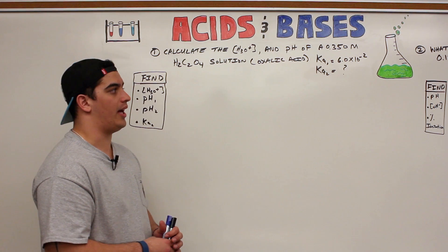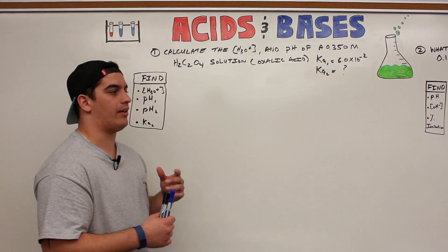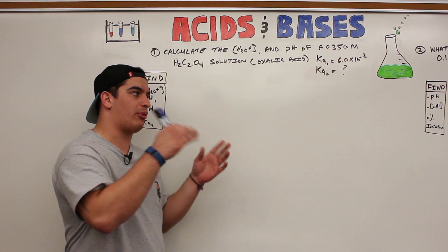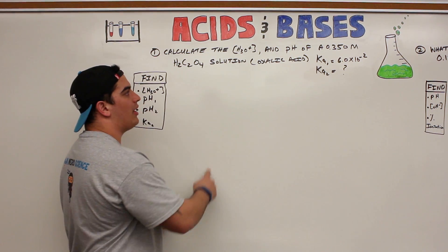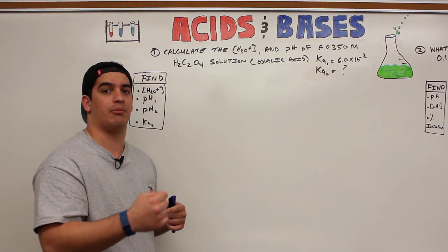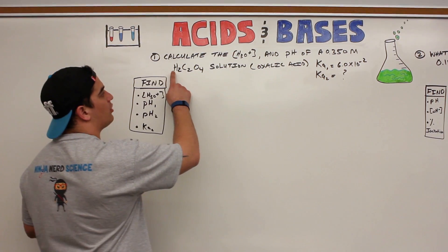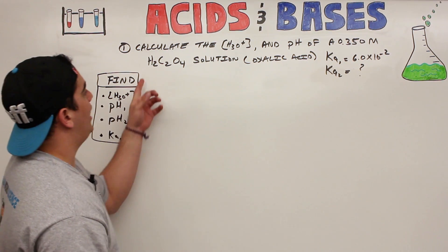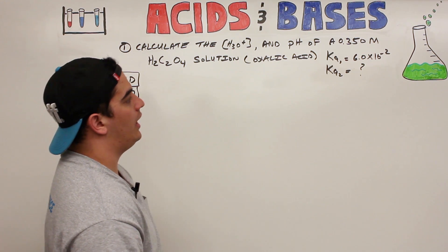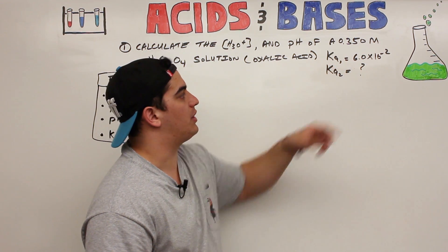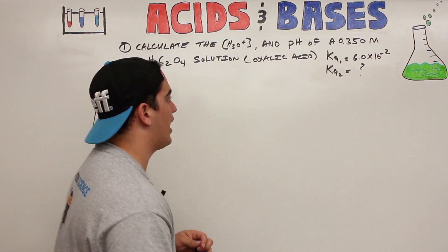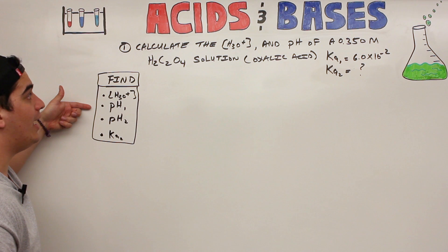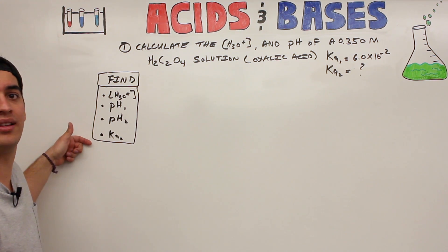Alright Ninja Nerds, in this video we're going to go over what happens when the percent ionization is greater than 5%. From the previous video we talked about doing an example where we might need the quadratic formula, but I'll show you another way to bypass that. The problem asks us to calculate the hydronium ion concentration and pH of a 0.350 molar H2C2O4 (oxalic acid) solution, with Ka1 = 6.0×10⁻² and we need to solve for Ka2. We want to find H3O⁺, the first pH, the second pH, and the second ionization constant.